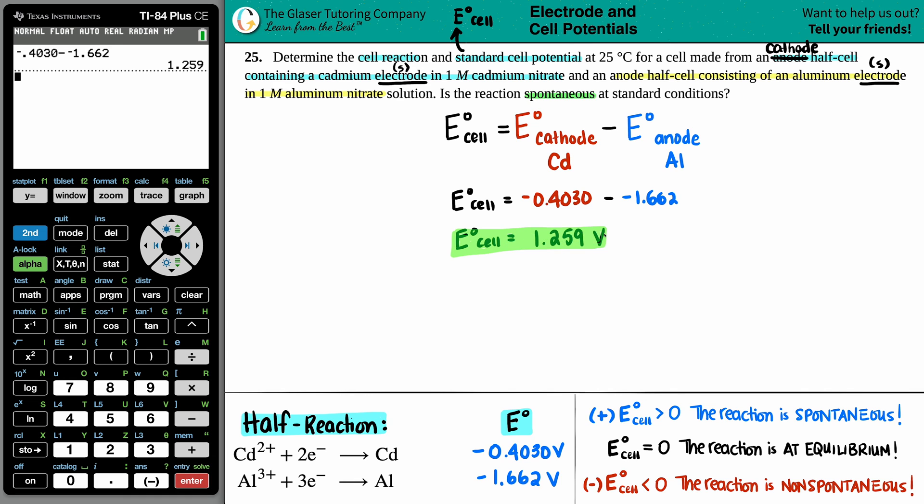Now the next step is to just quickly say whether this is a spontaneous reaction or not. And that comes from just knowing what sign you have on your E°cell that you just found out. If your E°cell is positive, that means you got a spontaneous reaction. If your E°cell is negative, that means that your reaction is non-spontaneous. So since 1.259 is a positive value, we know that this reaction is spontaneous, meaning that it's just going to go by itself to completion without any help from outside sources.